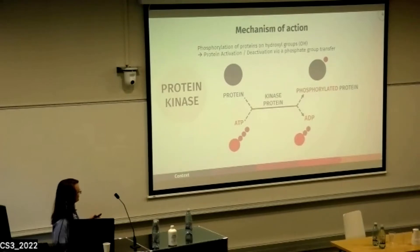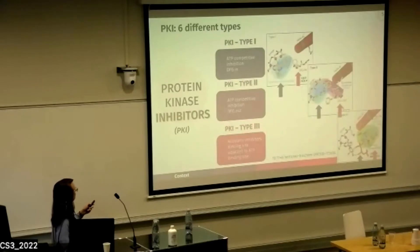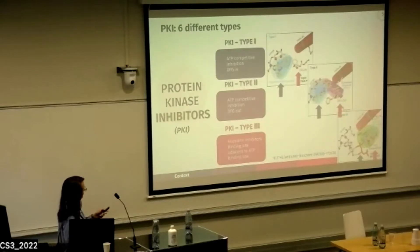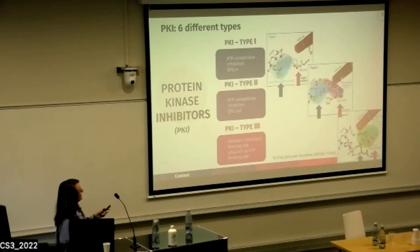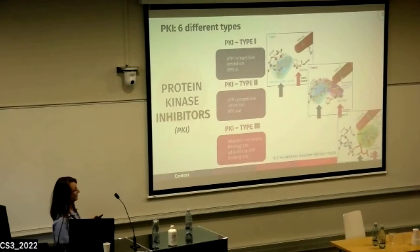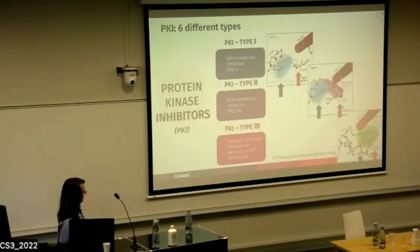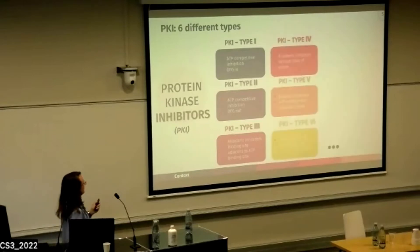Kinases act through a phosphate group transfer taken from ATP. In the literature we can find many different types of protein kinase inhibitors — I listed six. The first two types are competitive inhibitors, which occupy the ATP binding site. The third type is an allosteric inhibitor, which does not prevent ATP from binding but binds to an adjacent binding site. Several more types are less known in the literature.